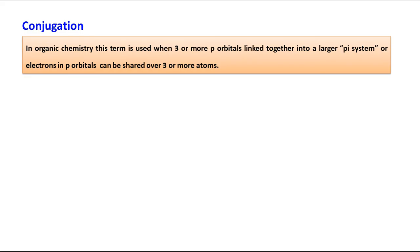So, conjugation — this term we use in organic chemistry when three or more p orbitals are linked together into a larger pi system. There must be three or more; it should not be less than three. These p orbitals must be linked together; if they are not linked together, formation of a larger pi system is not possible. The pi electrons present in the p orbitals are shared over three or more atoms.